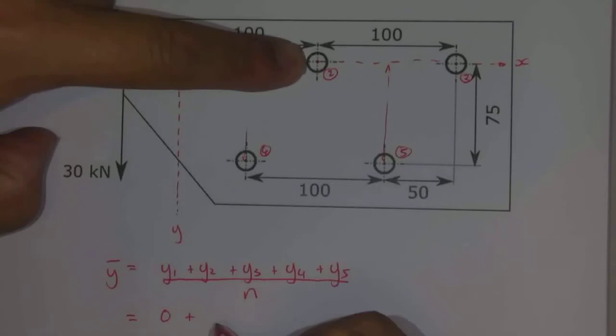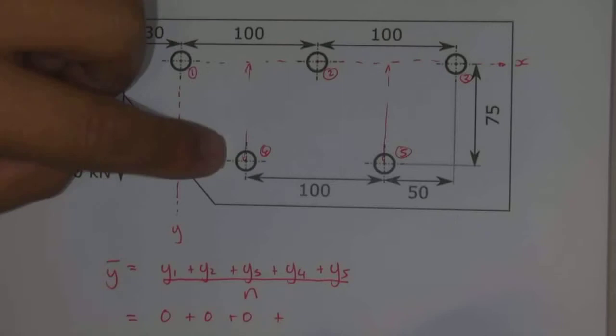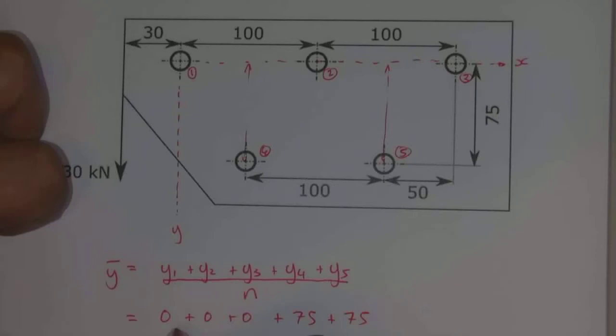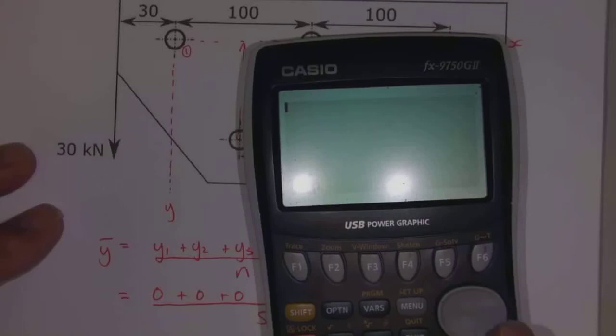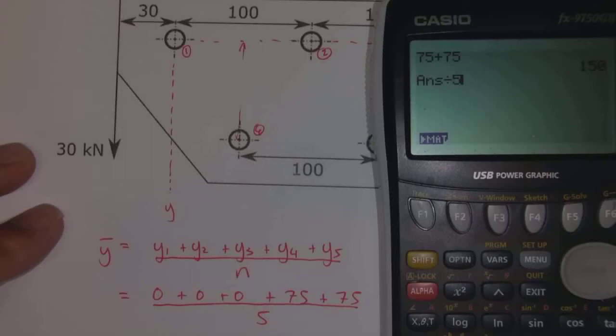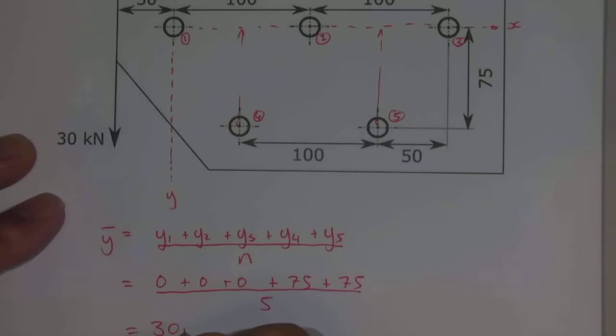And so we get zero plus zero plus zero plus 75 plus 75, all of that divided by how many bolts we've got, which is five. And then we can calculate what that's equal to. So we get 75 plus 75 divided by five, and our y coordinate is equal to 30.